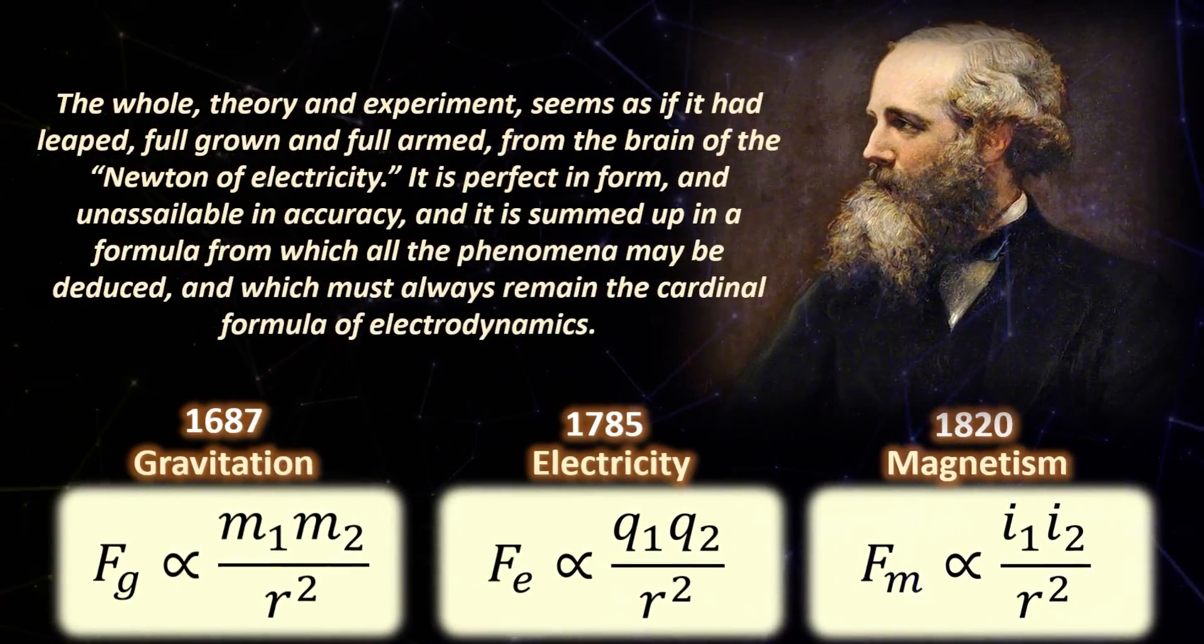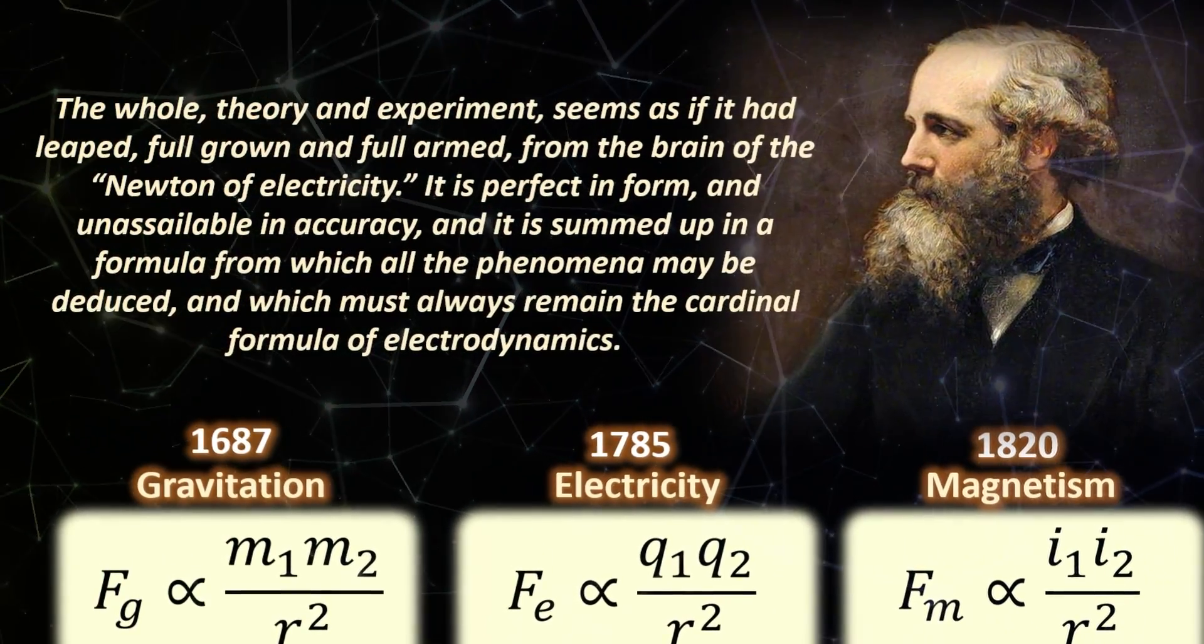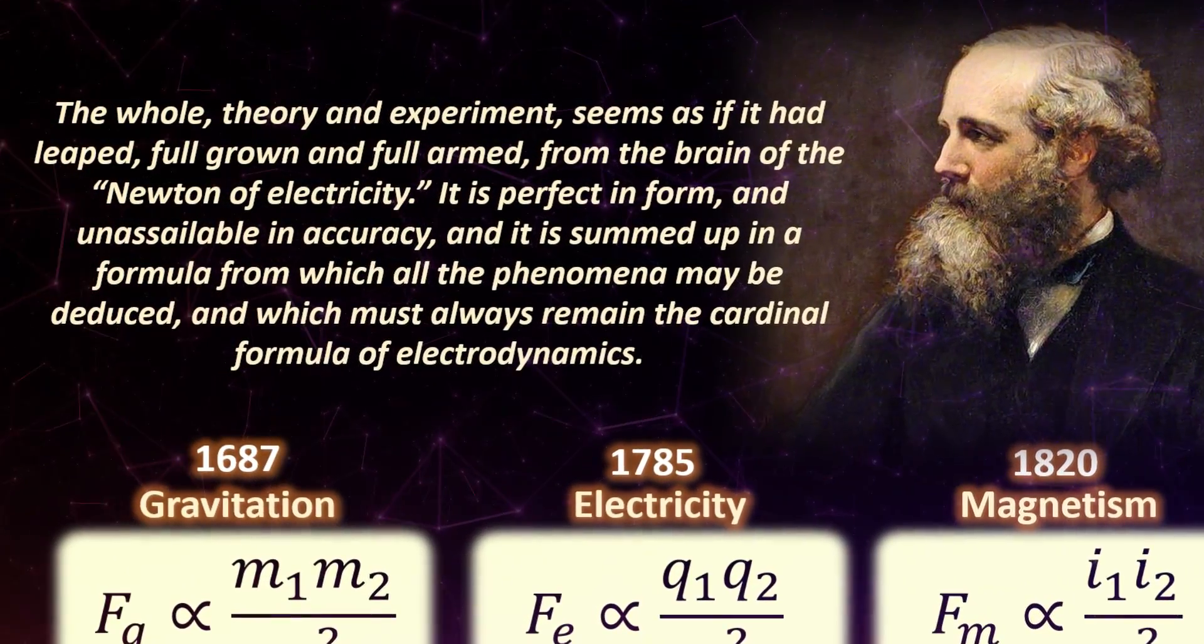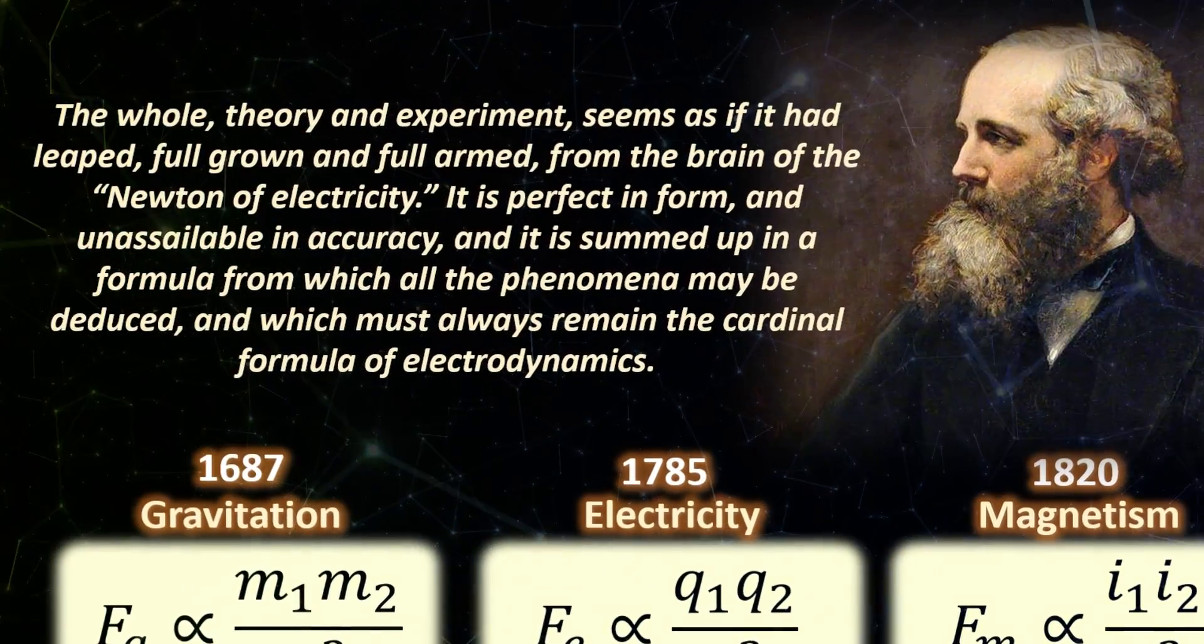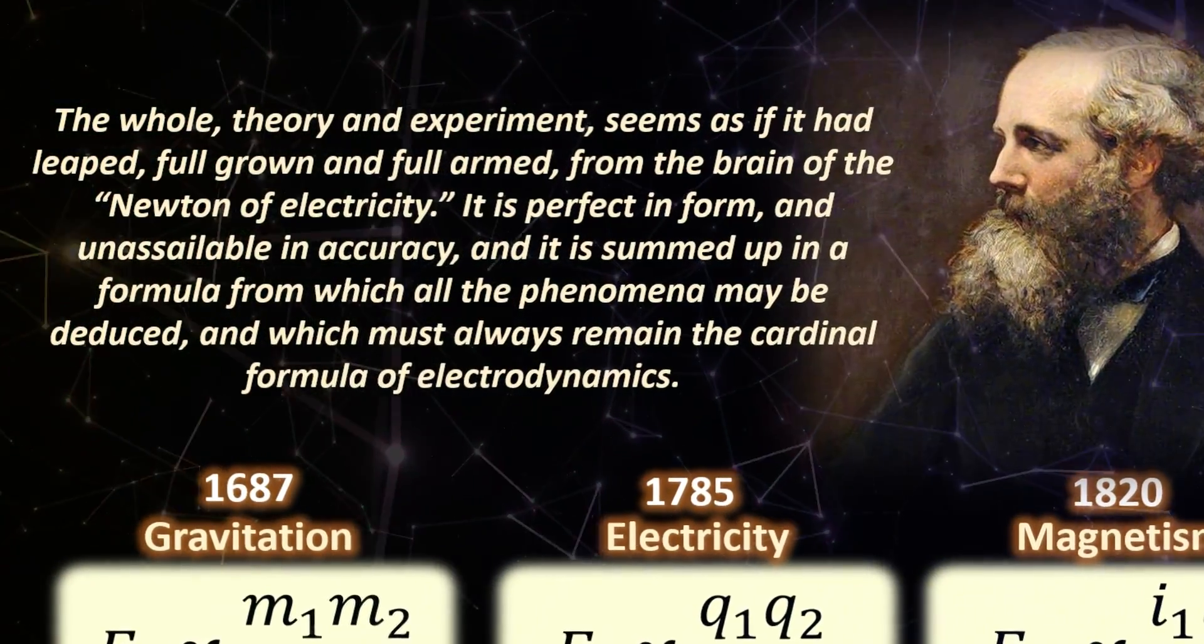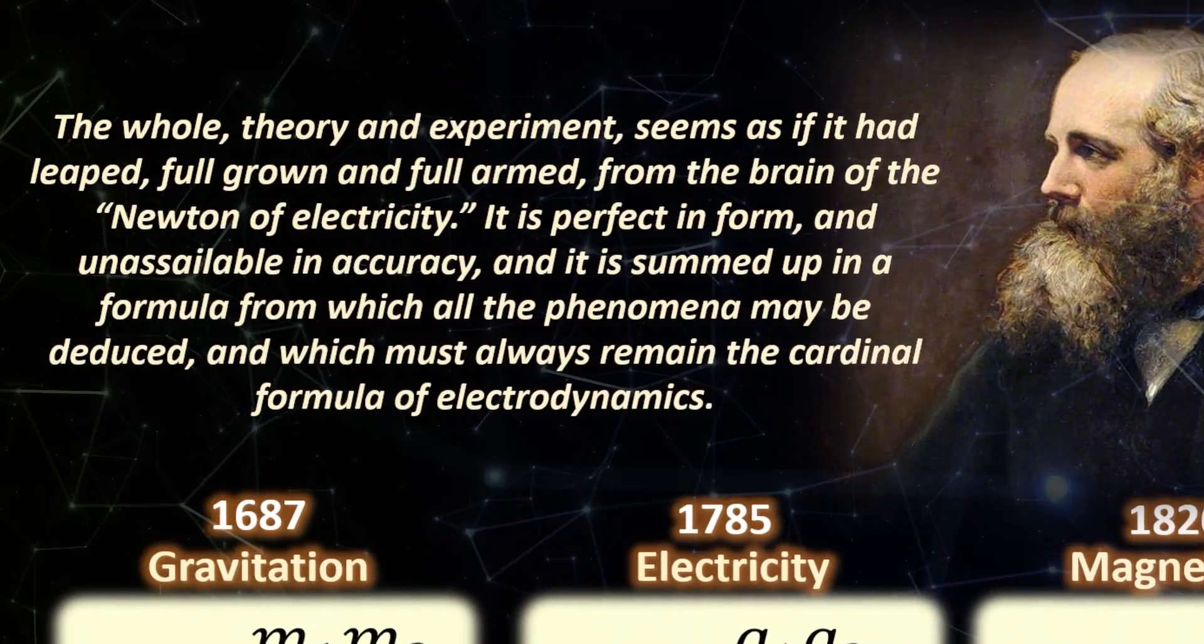As James Clerk Maxwell later puts it, the whole theory and experiment seems as if it had leapt full-grown and full-armed from the brain of the Newton of electricity. It is perfect in form and unassailable in accuracy, and it is summed up in a formula from which all the phenomena may be deduced and which must always remain the cardinal formula of electrodynamics.